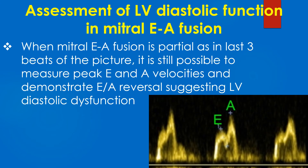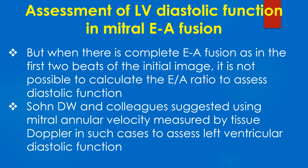When the mitral E/A fusion is partial, as in the last 3 beats of the picture, it is still possible to measure peak E and A velocities and demonstrate E-by-A reversal, suggesting left ventricular diastolic dysfunction. But when there is complete E/A fusion, as in the first 2 beats of the initial image, it is not possible to calculate the E/A ratio to assess diastolic function.